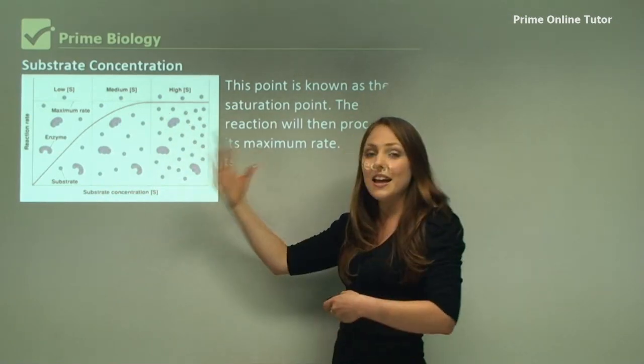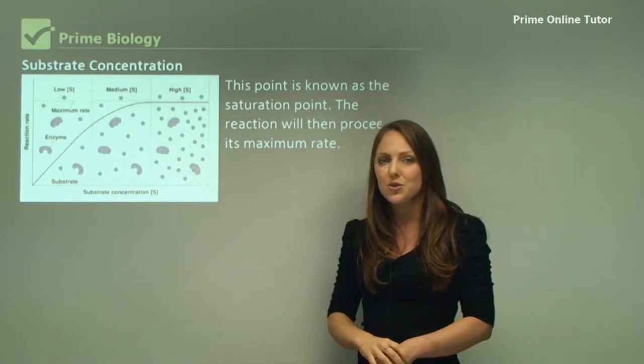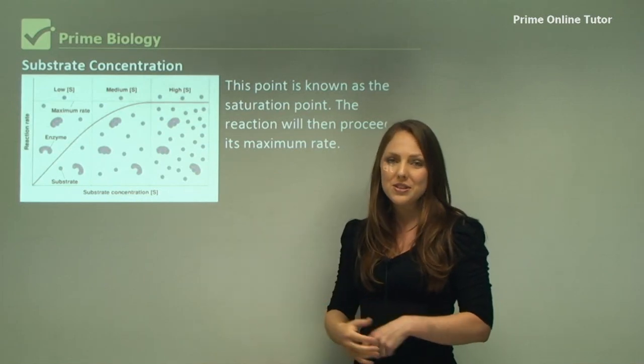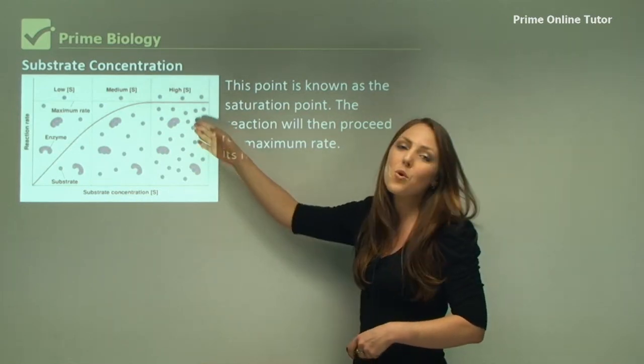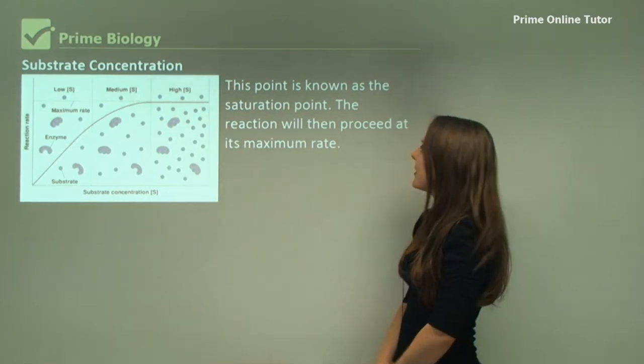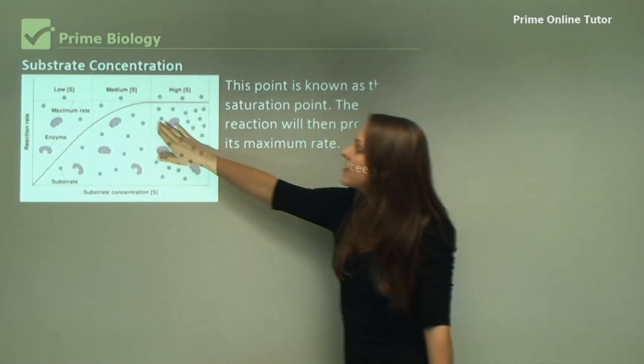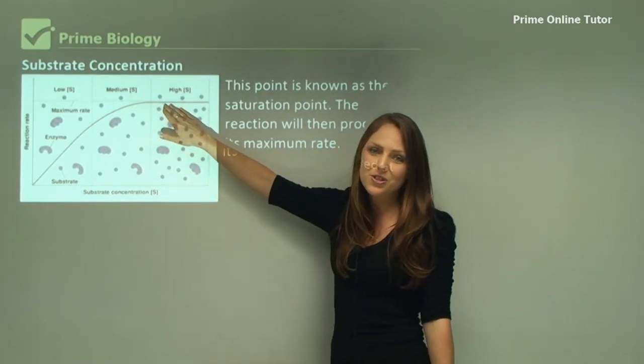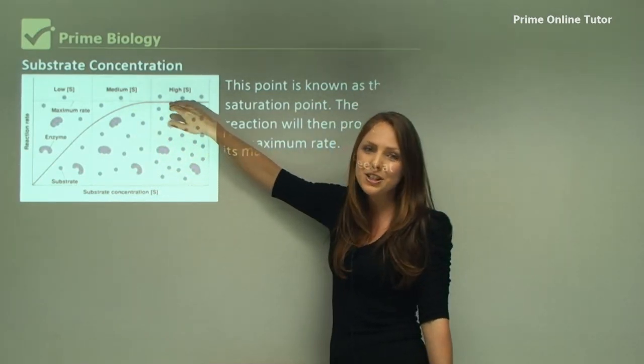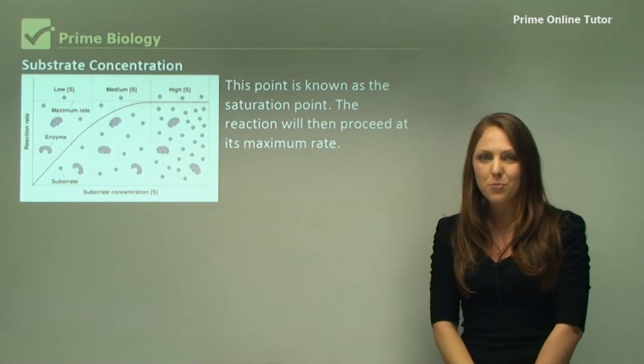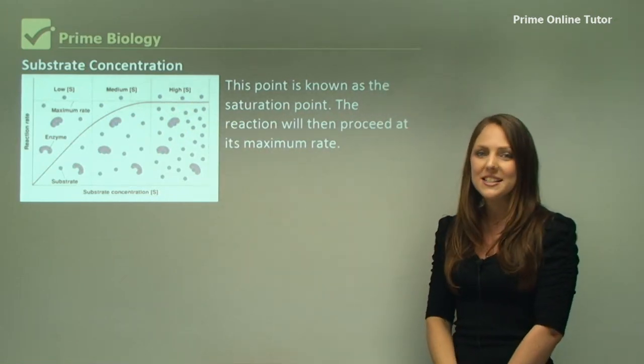This means that the enzymes will continue to work on those substrates. When they're completed on those substrates, they can get more substrates in the area. So this point here at the high substrate concentration, where it starts to plateau, is called the saturation point. All of the enzymes are taken up.